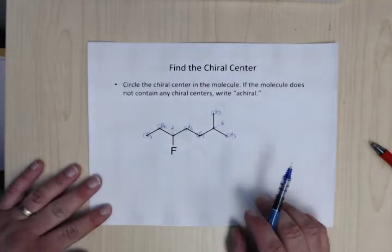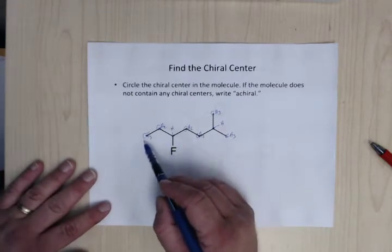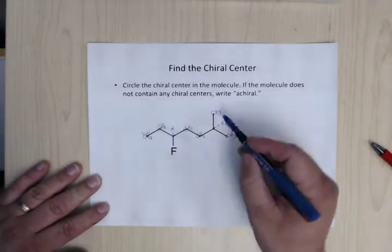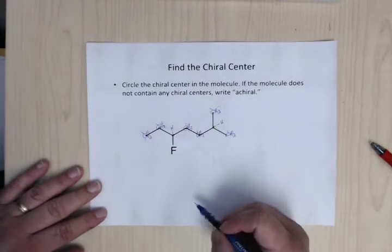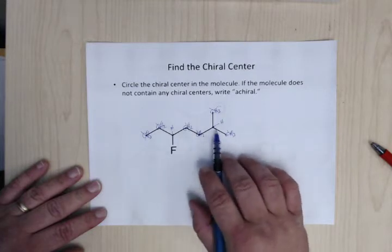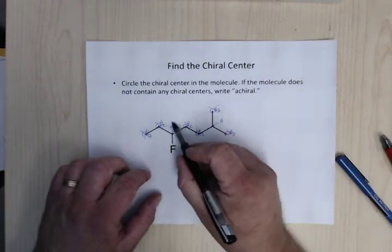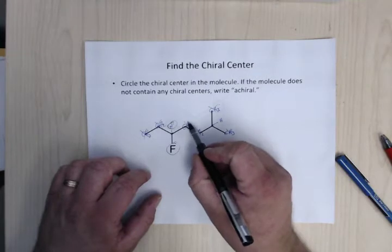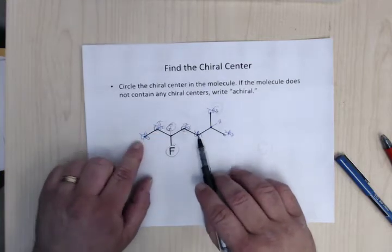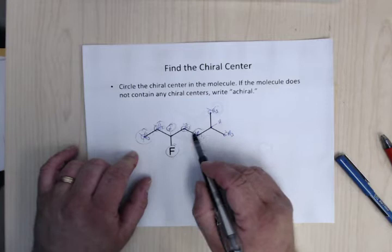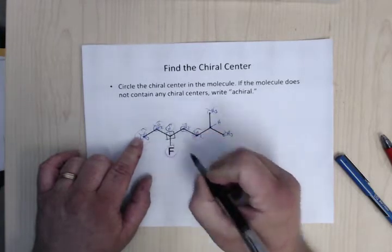Now, remember to have a chiral center, you have to have four different things hanging off of it. So here, CH3, right, so you have three hydrogens hanging off of it, so they're not different, so it can't be here. So any of the CH3 groups, it can't work. Same with the CH2s, right, there are two hydrogens. So the only potential ones you've got are here and here. So take a look at this one, right, so we have a hydrogen, a fluorine, a CH2, and a CH2.